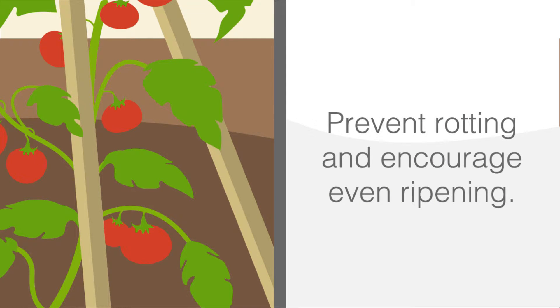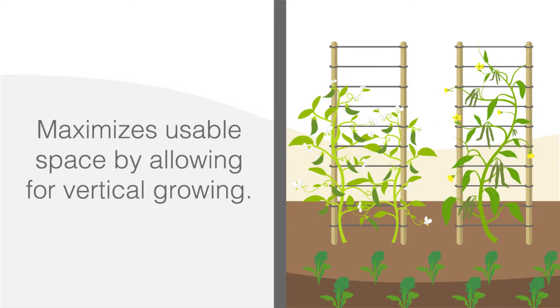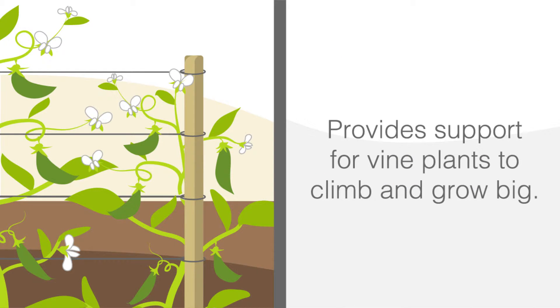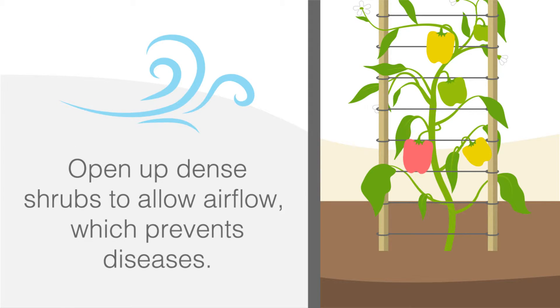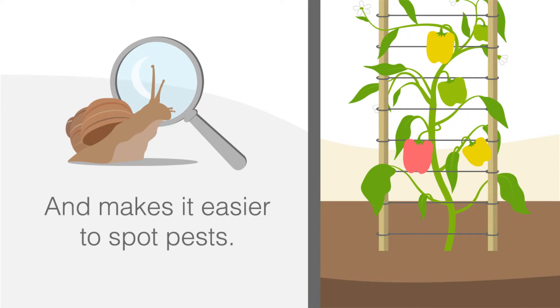Trellising lifts fruit off the ground to prevent rotting and encourage even ripening, maximizes usable space by allowing for vertical growing, and provides support for vine plants to climb and grow big. A trellis will also open up dense shrubs to allow air flow through the plant which prevents disease and makes it easier to spot pests.